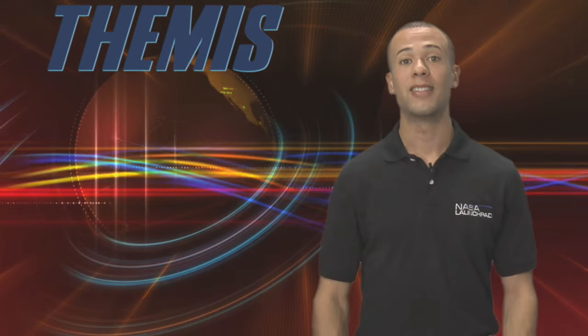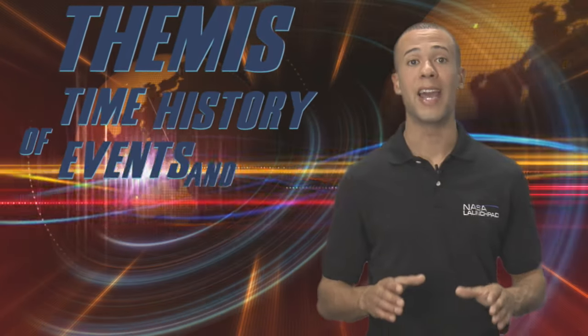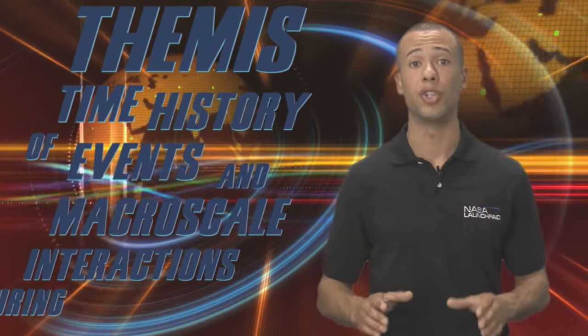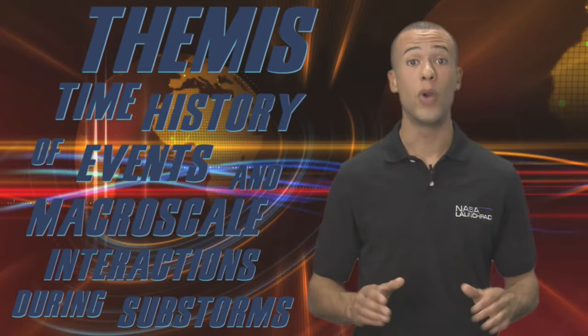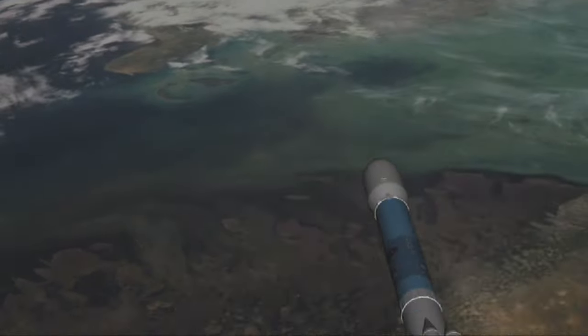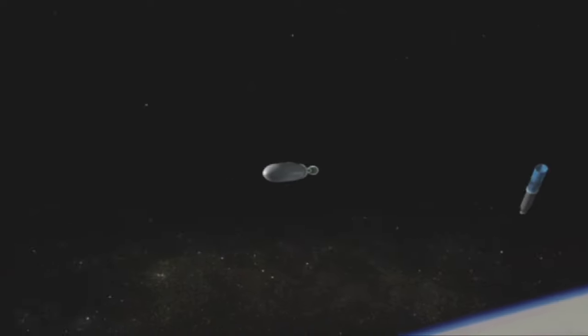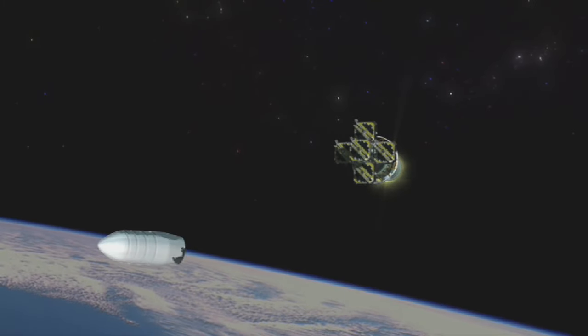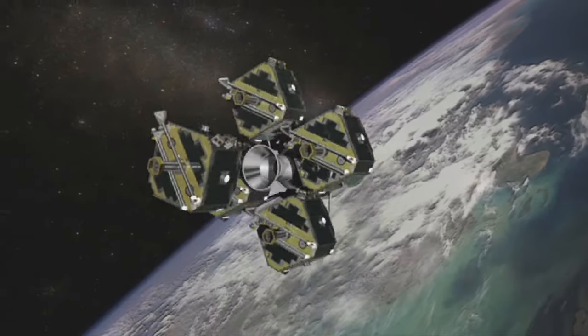Enter THEMIS, NASA's Time History of Events and Macroscale Interactions During Substorms mission. We'll just stick with THEMIS. Launched in February of 2007, the rocket carrying THEMIS arrived in space and released five identical probes.